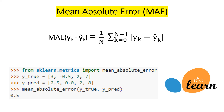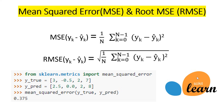We start with the Mean Absolute Error. The Mean Absolute Error is the sum of the absolute values of the residuals divided by the number of samples. It measures accuracy for continuous variables. The lower the value of MAE, the better the model, and its range is from zero to infinity. We can use scikit-learn to import the Mean Absolute Error and use it directly to compare our predicted values with the true values.